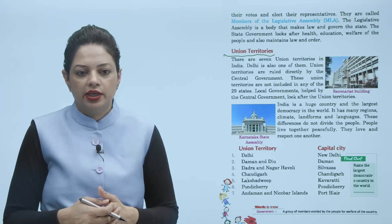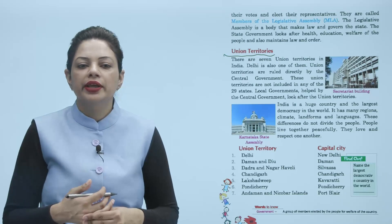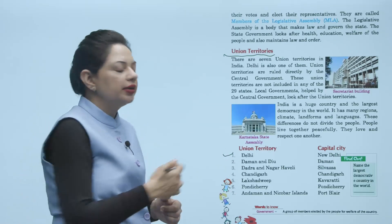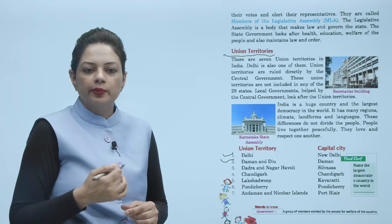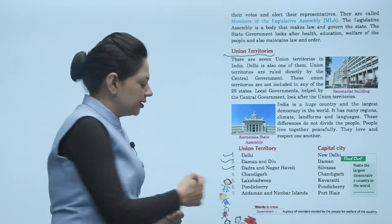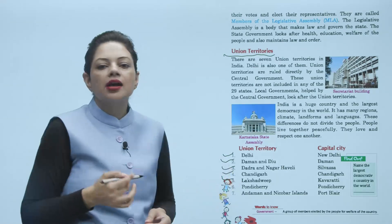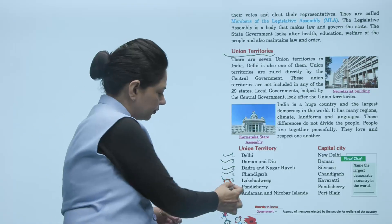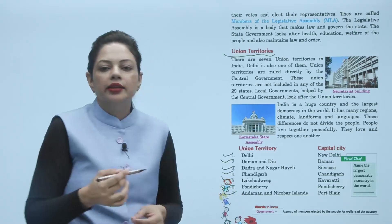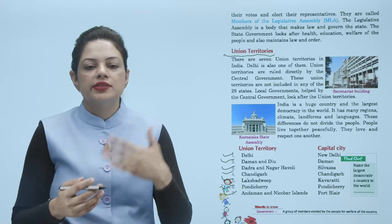Now we will talk about union territories and their capitals. There are seven union territories. The first is Delhi and the capital is New Delhi. Second is Daman and Diu. Third is Dadra and Nagar Haveli and the capital is Silvasa. Fourth is Chandigarh and the capital is Chandigarh itself. Next is Lakshadweep and the capital is Kavaratti. Next is Pondicherry and the capital is Pondicherry itself. Next is Andaman and Nicobar Islands and the capital is Port Blair. So these are our seven union territories and their capital cities.